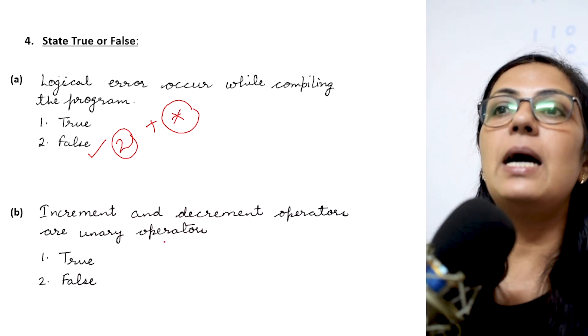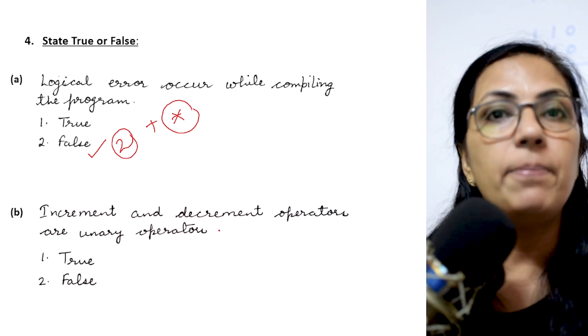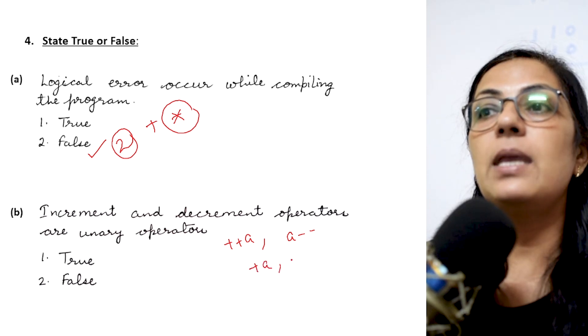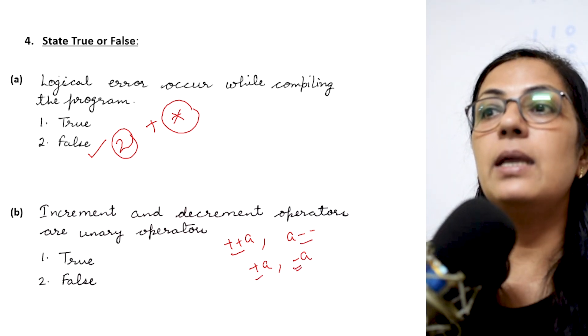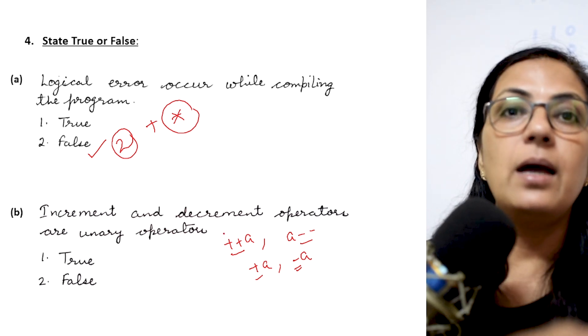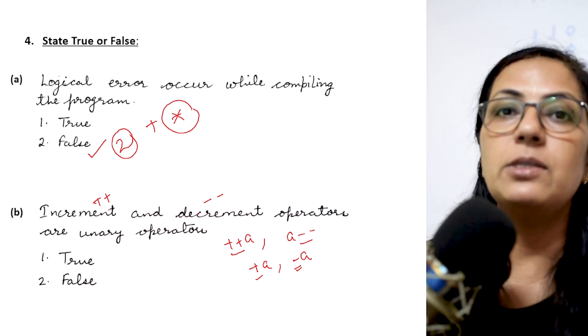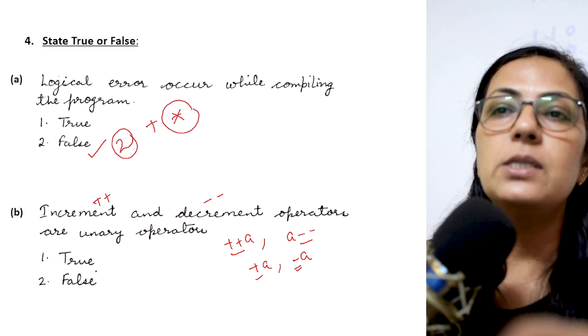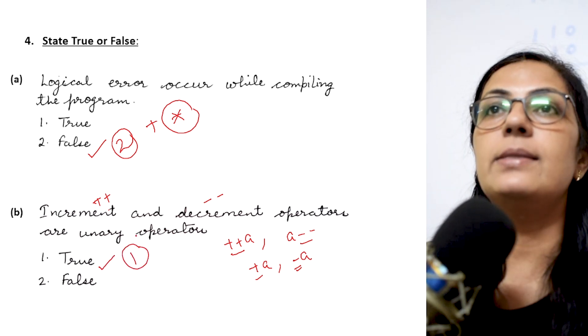Increment and decrement are unary operator. Unary operators are the operators which need only one operand to work. Like you have plus plus a, a minus minus, you have plus a minus a. So all these operators if you see are taking only one operand with it. So these operators are termed as unary operators. Plus plus is known as increment operator and minus minus is known as decrement operator and always we know that whenever we are using these two operators we just write only one operand with that. So it is true. Option 1 is the correct answer.